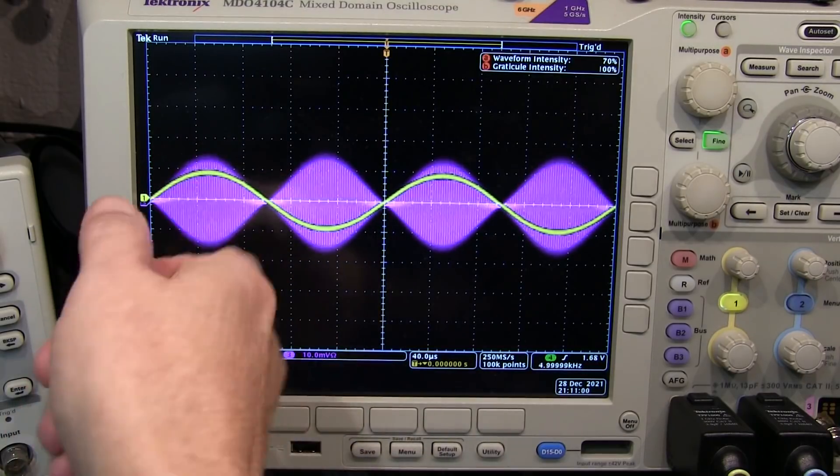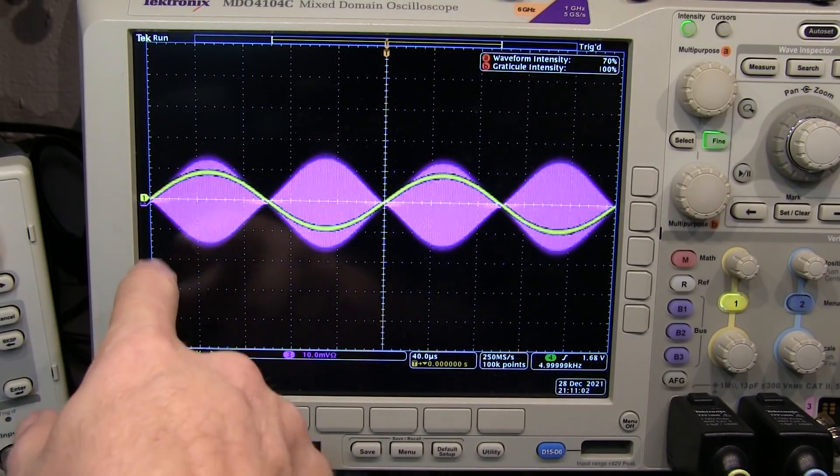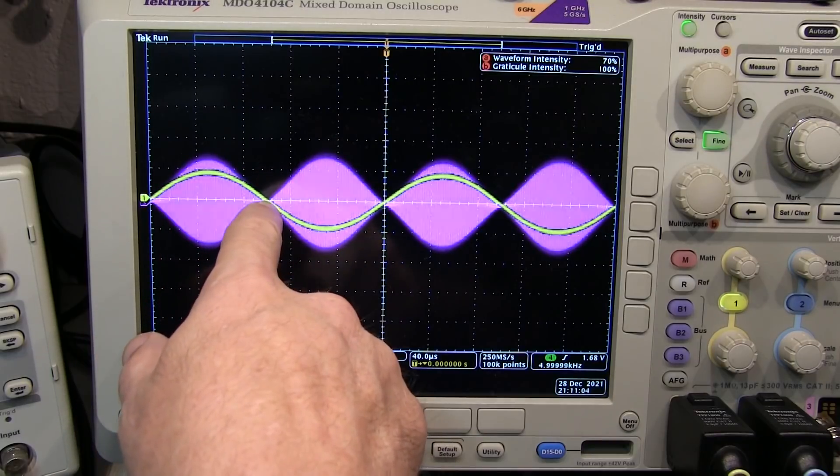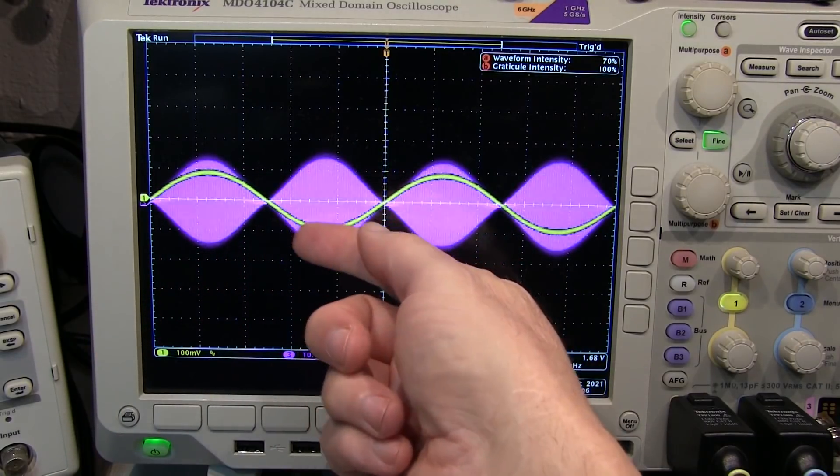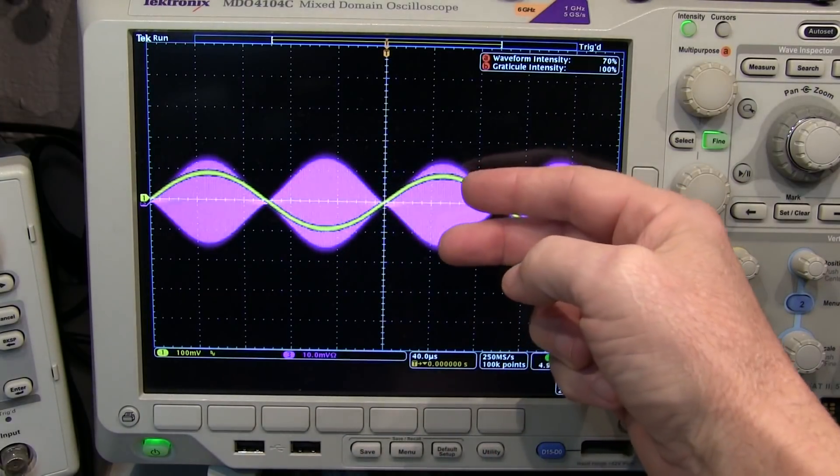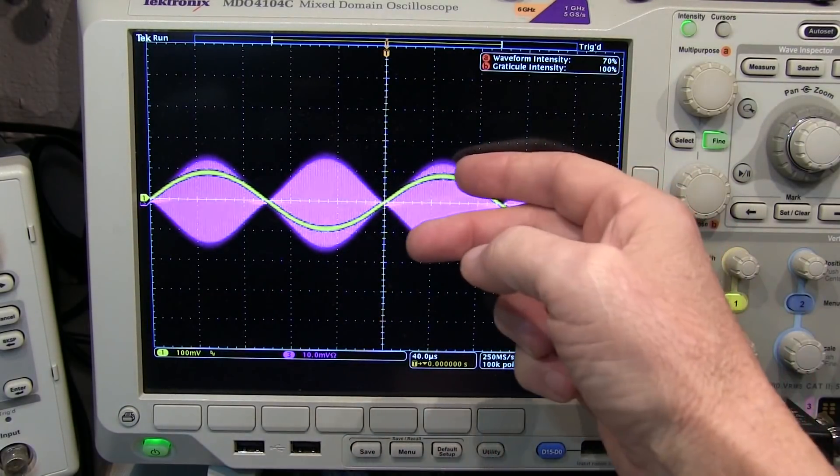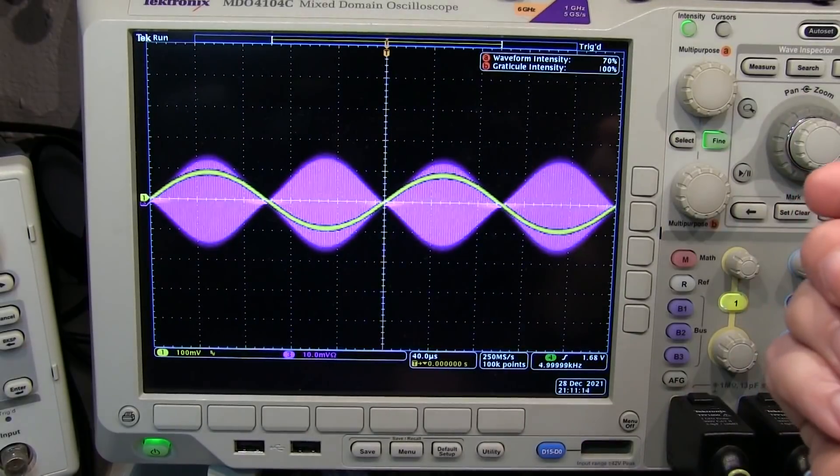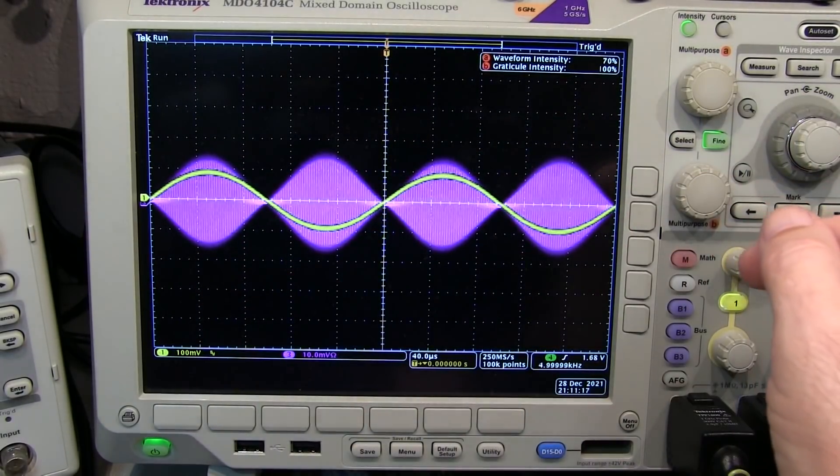So what's going on is when the baseband is going up, the carrier is being driven higher and higher through the mixing process. But then when we cross through zero, we're getting essentially the carrier is being inverted. Okay, and its phase is being inverted each time we go back and forth. And this essentially creates a double sideband suppressed carrier waveform.